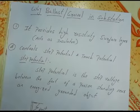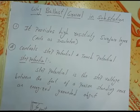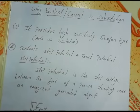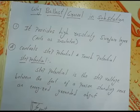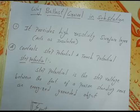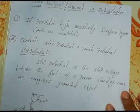Good morning friends. Today I am going to explain why ballast or gravel is used in the substation. The number one point is it provides a high resistivity surface layer — when you put the ballast or gravel in the substation, it will act as an insulator. This is the first point. The second point is it will control step and touch potential.